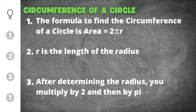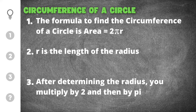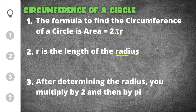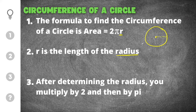As you can see we have three important things to remember when finding the circumference of a circle. First, you need to know the formula: circumference equals two times pi times r. The r in this case is the length of the radius, and the radius of a circle is the distance from the center of that circle out to the edge.